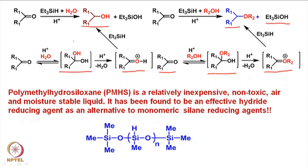This is how triethylsilane has been utilized for the reduction of carbonyl compounds under different conditions. In addition to triethylsilane and different silanes, people have also started using polymethylhydrosiloxane (PMHS), which is a relatively inexpensive, non-toxic, air- and moisture-stable liquid — a polymeric liquid. It has been found to be an effective hydride reducing agent as an alternate to monomeric silane reducing agents such as triethylsilane. We will discuss other aspects of PMHS and other reducing agents in the next class. Till then, bye. Thank you.